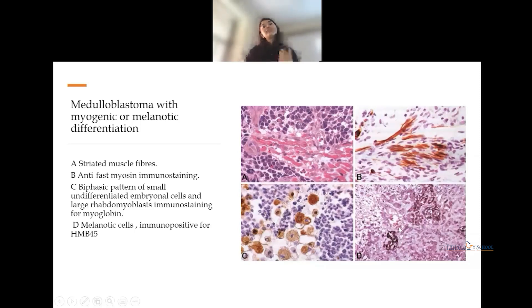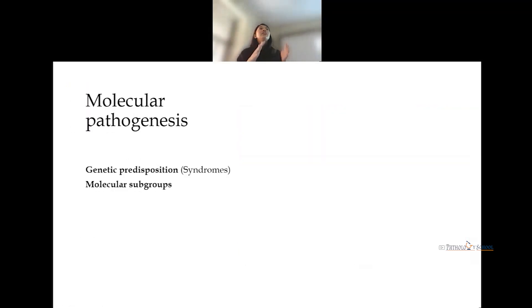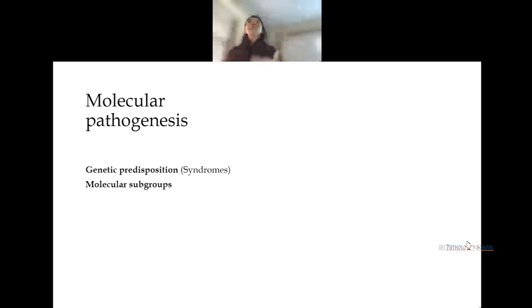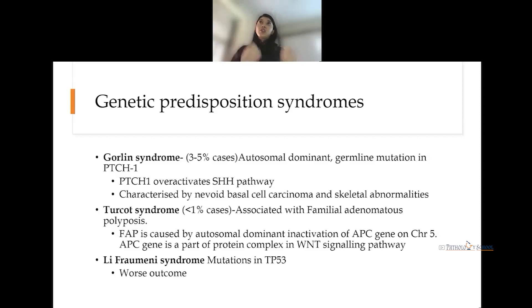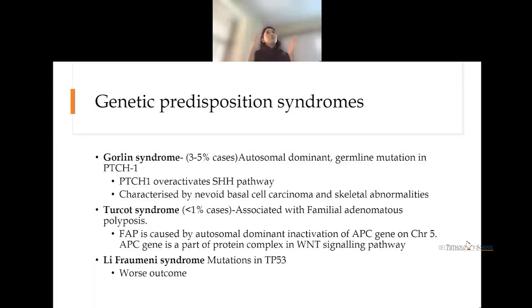Regarding molecular typing, these molecular subgroups are associated with genetic predisposition syndromes: Gorlin syndrome, Turcot syndrome, and Li-Fraumeni syndrome. Gorlin syndrome is most commonly associated with sonic hedgehog type medulloblastoma. It is autosomal dominant with a germline mutation in the PTCH1 gene, which normally suppresses the sonic hedgehog pathway — its deficiency leads to tumor proliferation. It is also called nevoid basal cell carcinoma syndrome and is associated with skeletal abnormalities.